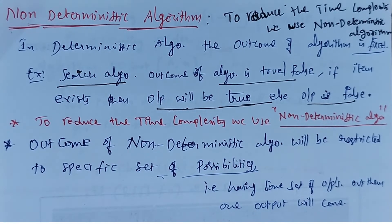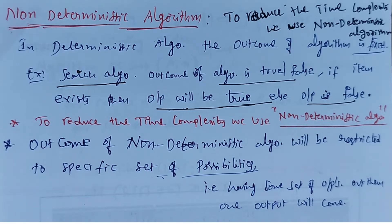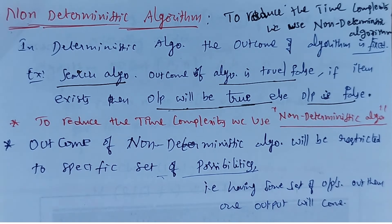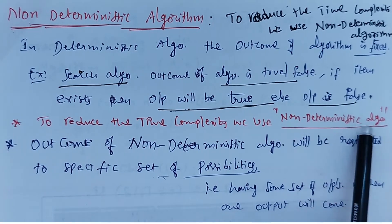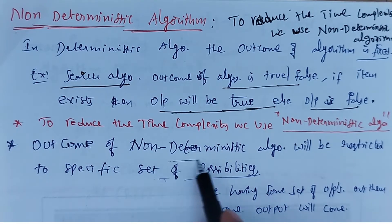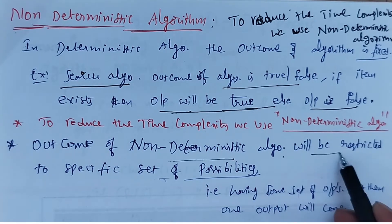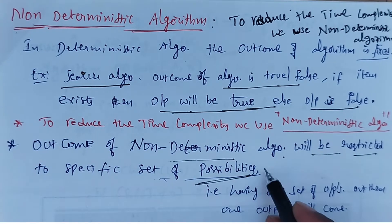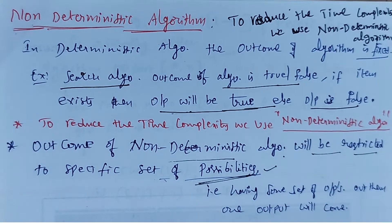A non-deterministic algorithm is used to reduce the time complexity. When you want to reduce the time complexity, in those cases we use non-deterministic algorithms. The outcome of non-deterministic algorithms is restricted to a specified set of possibilities.